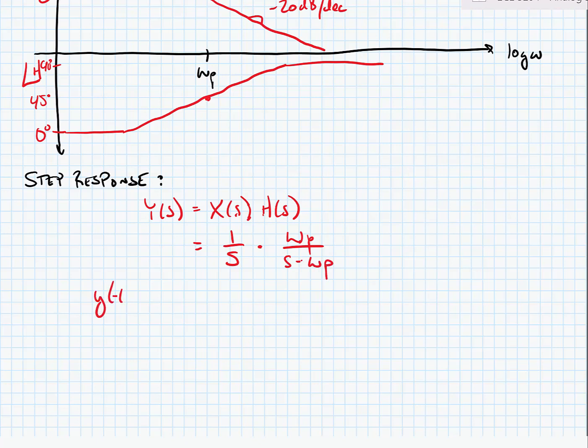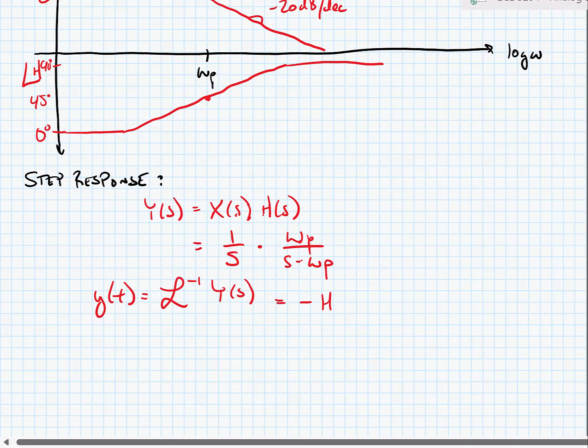Y of t is equal to the inverse Laplace transform of y of s. And if we take the inverse Laplace transform, looking this up from tables, we would find that this was equal to minus h of t, the heaviside step function, plus e to the omega p times t.